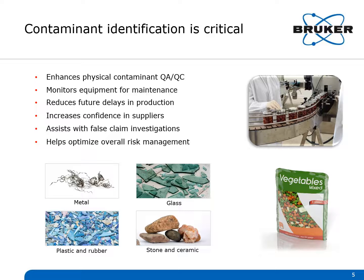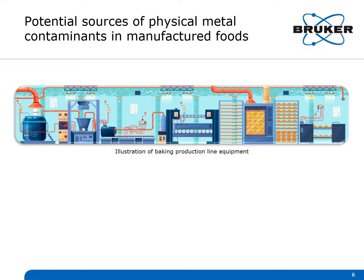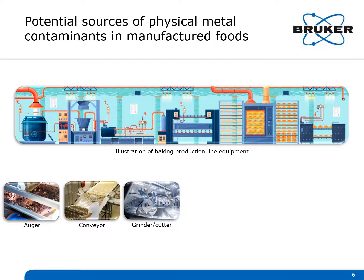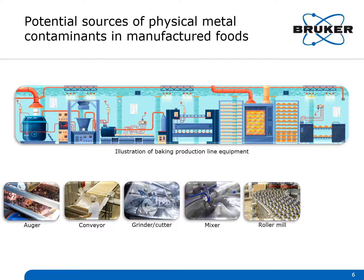So, how can you determine where these contaminants originate? We'll use the case of metal contaminants to explain. Looking at an illustration of a simple baking production line — from starting material delivery systems to end product packaging — brings to mind the various potential sources of physical metal contaminants. Most equipment is constantly moving and frequently exposed to high temperatures, humidity, vibration, and the powder solids or liquids from various stages of food production. Typical contaminant sources can include augers, conveyors, grinders or cutters, mixers, roller mills, and sorters or packagers.